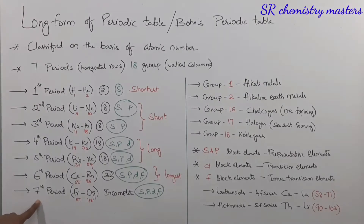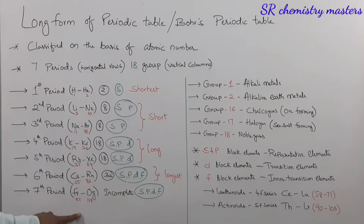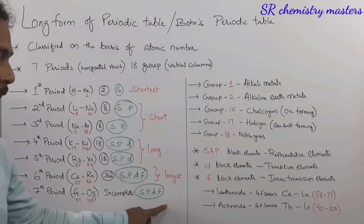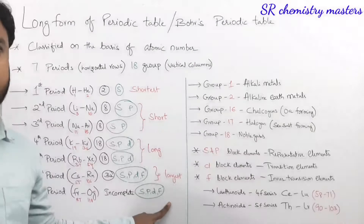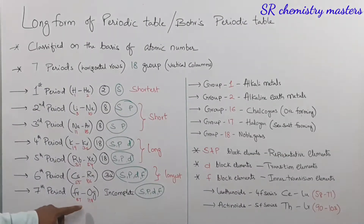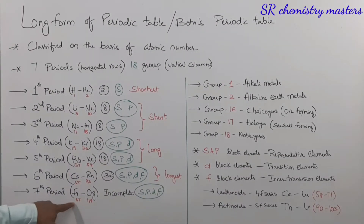The seventh period starts with francium and ends with oganesson. Here we have elements again from the s, p, d, and f blocks, but some of the elements are not yet discovered, so this period is considered as an incomplete period.